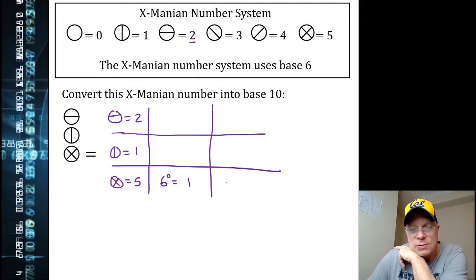But you're still going to be counting ones in any base number system you use for your lowest whole number place value. And then this is 6 to the first power or the sixes place, and this is 6 to the second power or the thirty-sixes place.